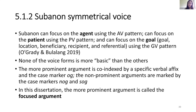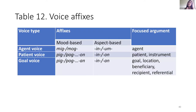That's not the case of the Subanon voice system, because the Subanon voice system is symmetrical. It can focus on the agent using the agent voice pattern, on the patient using the patient voice pattern, and on the goal — which can be a goal, location, beneficiary, recipient, or referential — using the goal voice pattern. None of the voice forms is more basic than the other. The more prominent argument is co-indexed by a specific verbal affix and the case marker og. The non-prominent arguments are marked by the case markers nong and song. The more prominent argument is called the focused argument. The voice affixes are split into mood-based and aspect-based, each with agent voice, patient voice, and goal voice.